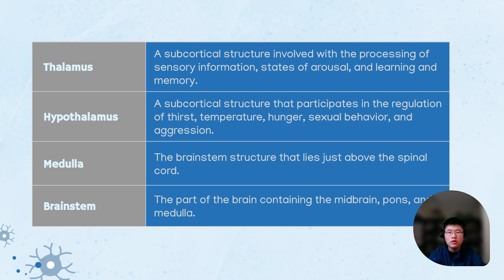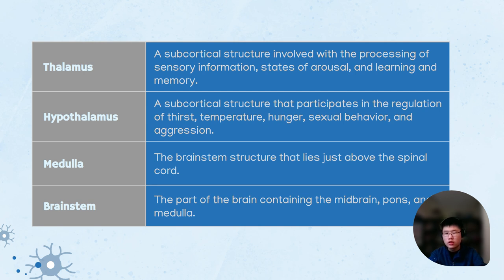The thalamus is a subcortical structure involved with the processing of sensory information, states of arousal, and learning and memory. The hypothalamus is a subcortical structure that participates in regulation of thirst, temperature, hunger, sexual behavior, and aggression. The medulla is a brainstem structure that lies just above the spinal cord. The brainstem connects and contains the midbrain, the pons, and the medulla.